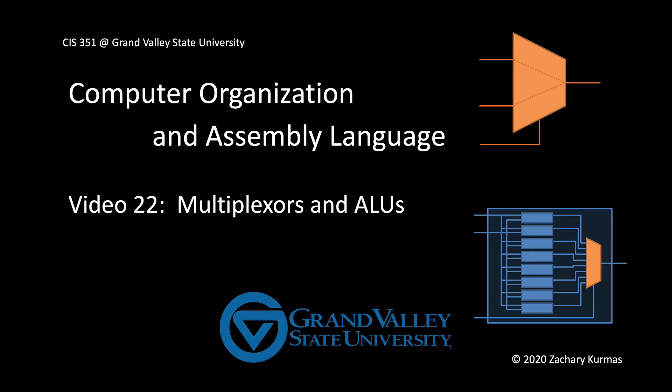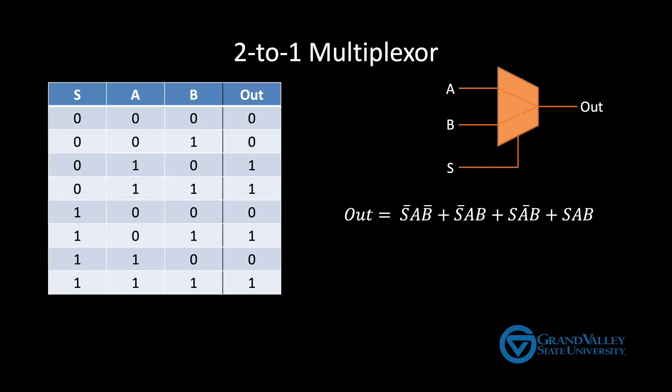In the previous videos, we saw how to use Boolean algebra to take the sum of products for a 2 to 1 MUX and significantly reduce it. In this video, we'll look more closely at the simplified expression, see how to generalize it to build larger MUXs, and then use those MUXs to build an ALU.